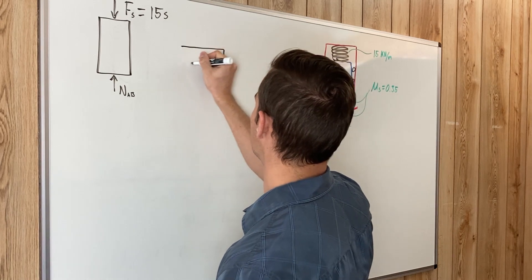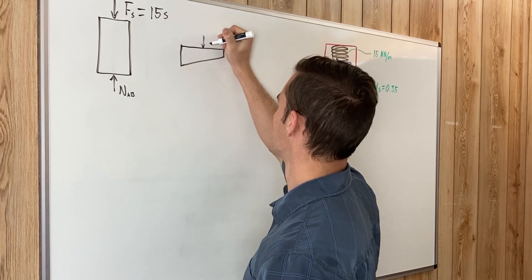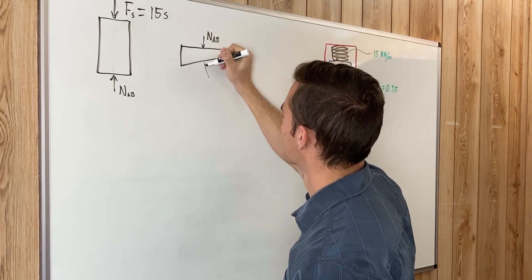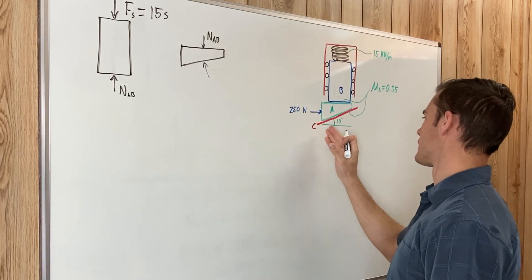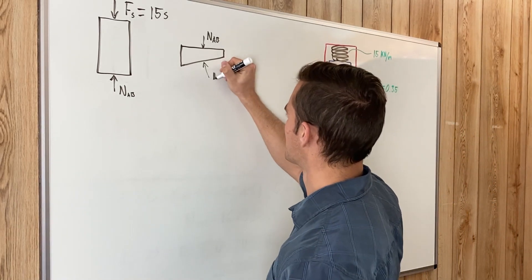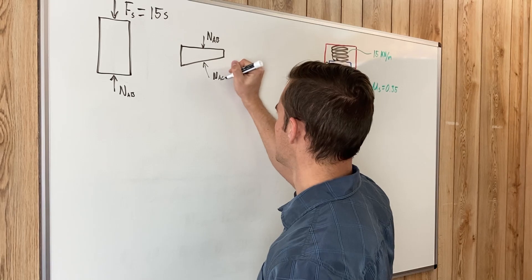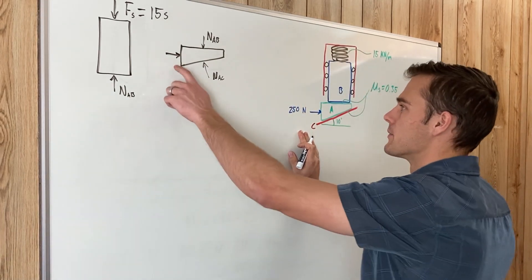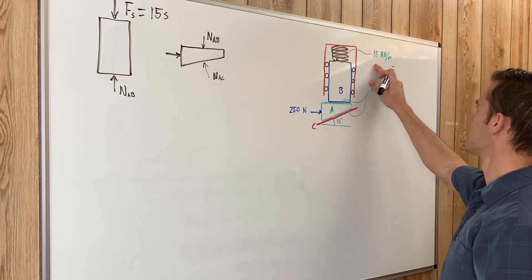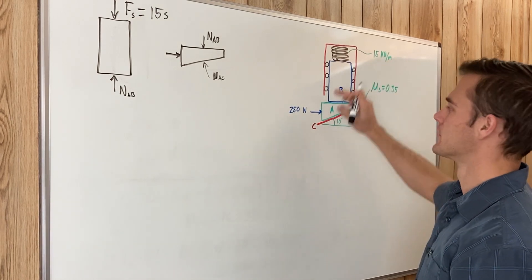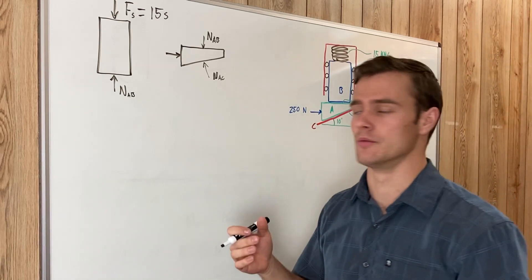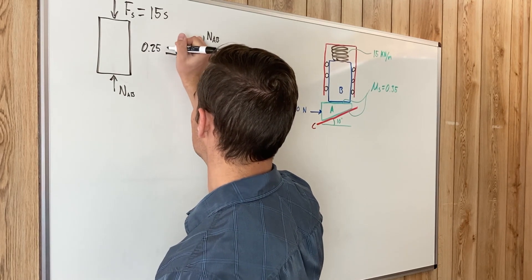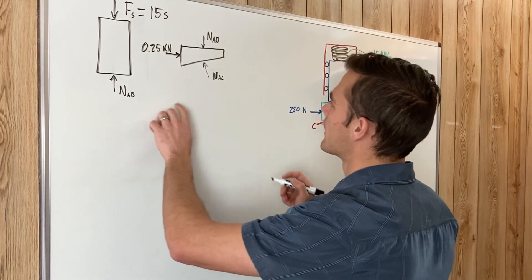The wedge also has that same normal force NAB pushing in the opposite direction. On the other side, between the wedge and the ground, we have normal force NAC. There is also an external force of 250 newtons. Since the spring constant is in kilonewtons per meter, we convert 250 newtons to 0.25 kilonewtons to keep consistent units.